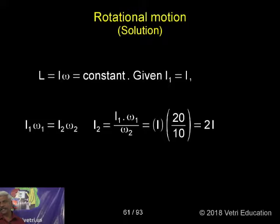I omega is constant means I, I divided by R. What is R? Such as here hand, omega angular speed. Given I₁ is equal to I.